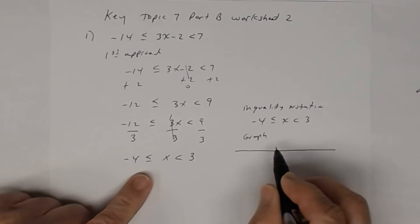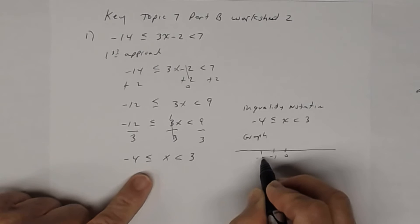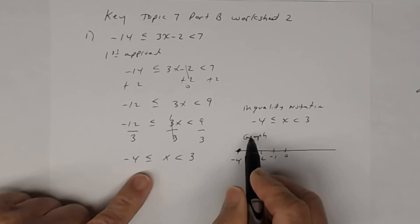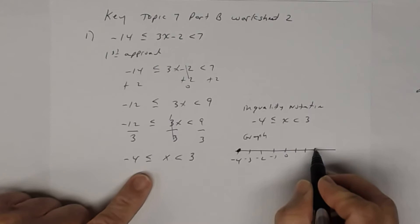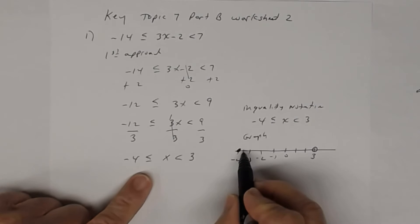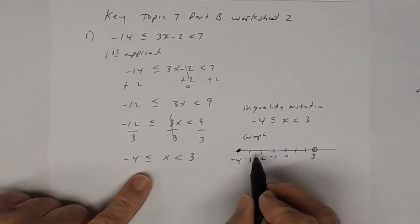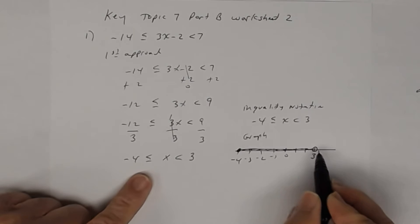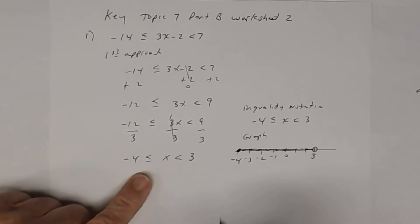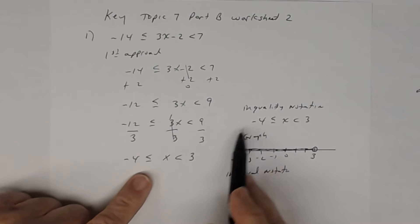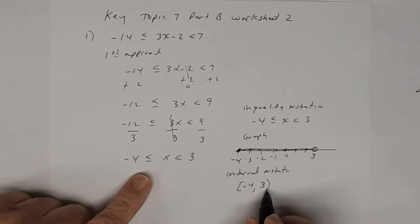For the graph, on your number line — if this is 0, negative 1, negative 2, negative 3, negative 4 — you're going to have a closed circle on negative 4 because it's an equal sign, and an open circle on 3 because 3 is not a solution. You shade in the solutions between those two. The interval notation is bracket negative 4, comma 3, parenthesis — in order from left to right, smallest to largest.